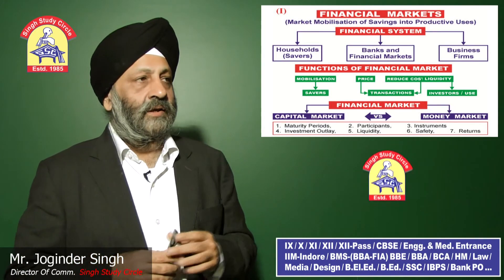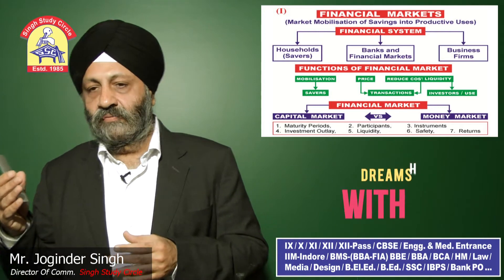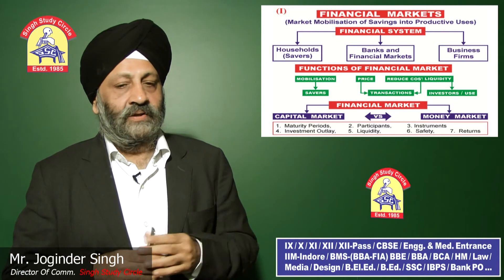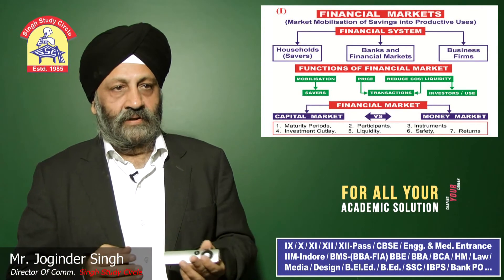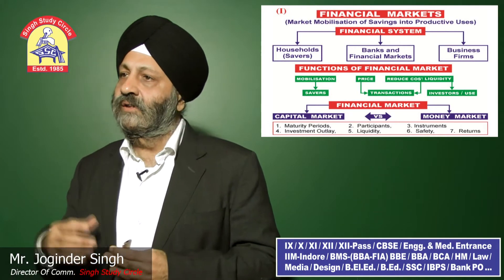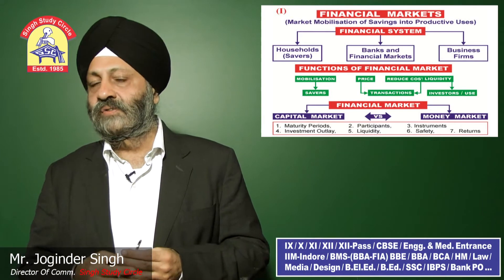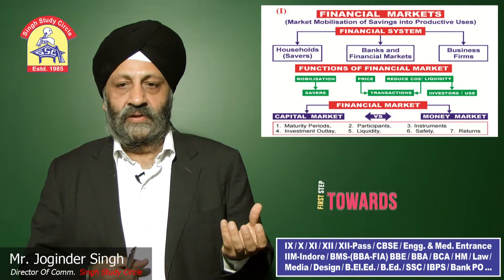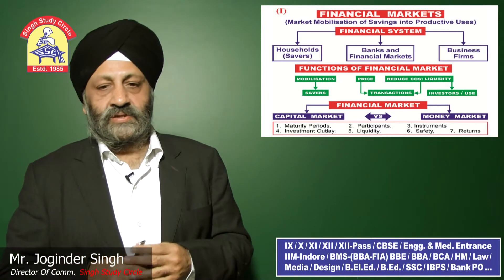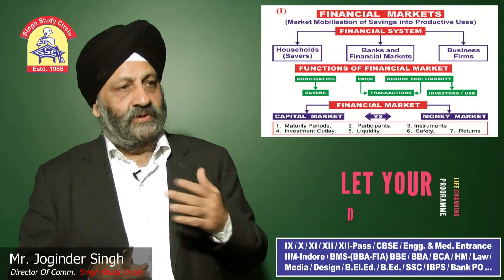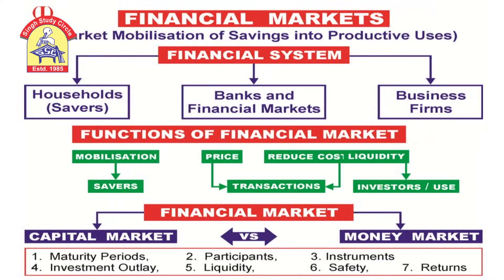There are two types of markets: capital market and money market. To decide between them, we consider seven points: first is maturity period — capital market is for long-term investment while money market is for short-term. The remaining points are: participants, instruments, investment outlay, liquidity, safety, and returns.